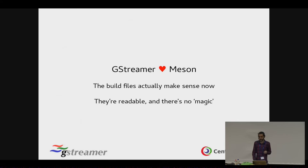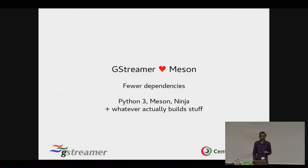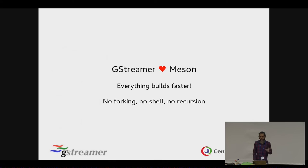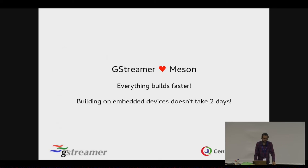Building on Windows is so much easier now because there are fewer dependencies. We don't use shell, we don't use M4, grep, or whatever else — you don't need a kitchen sink to build on Windows. You just need Python, Ninja, and Meson. Everything actually builds faster — we have builds happening 10 times faster on Windows now. It's actually tolerable; instead of taking a day, it takes just a few hours. There's no recursion, there's no shell, and on Windows forking anything at all slows everything down. And as an advantage, building on embedded devices doesn't take two days either.